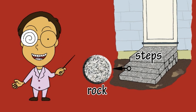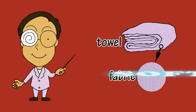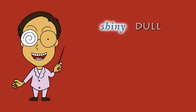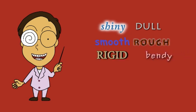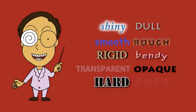The rock these steps are made of is hard, but the fabric this towel is made of is soft. Shiny or dull, smooth or rough, rigid or bendy, transparent or opaque, and hard or soft are some of the properties different materials can have.